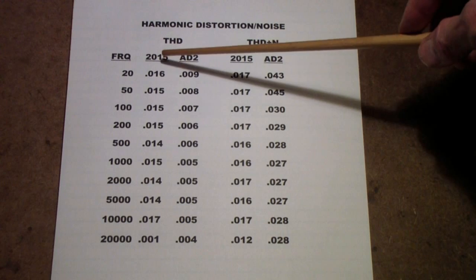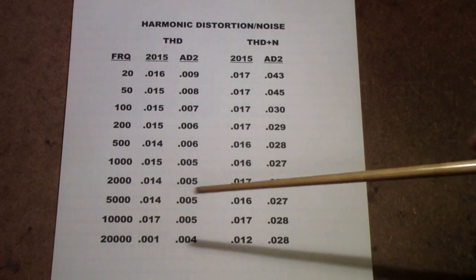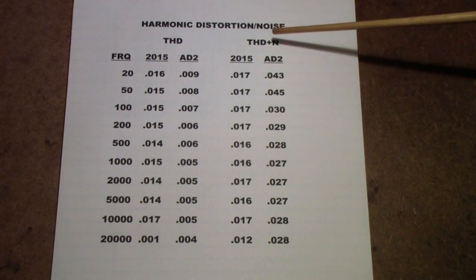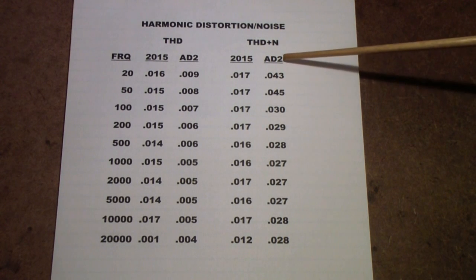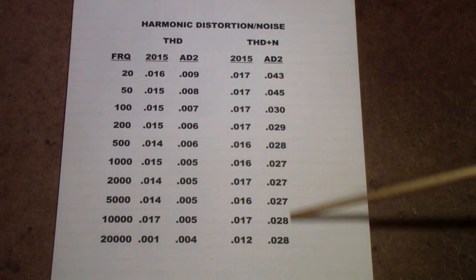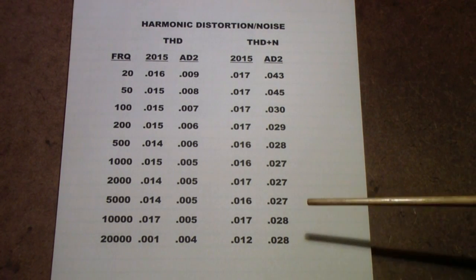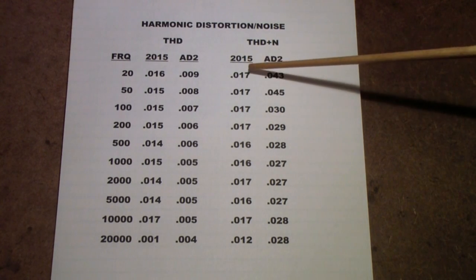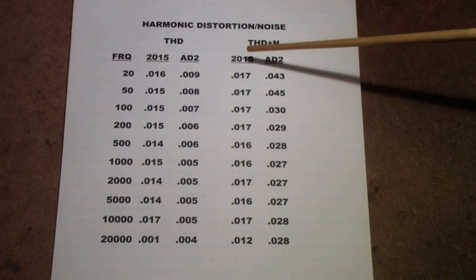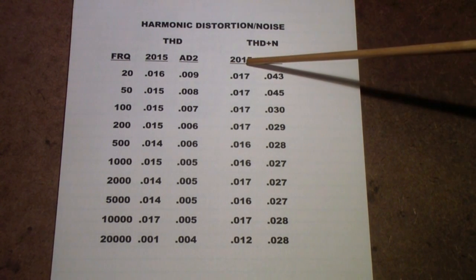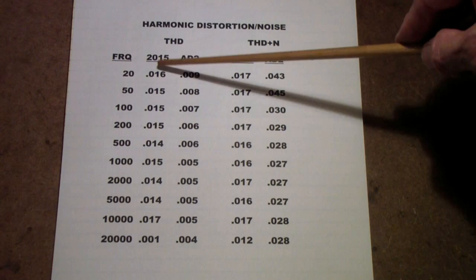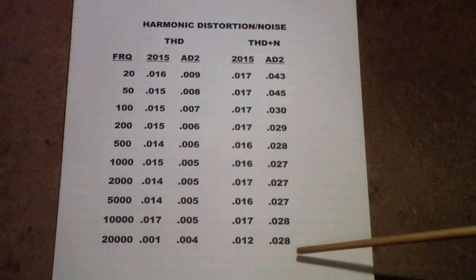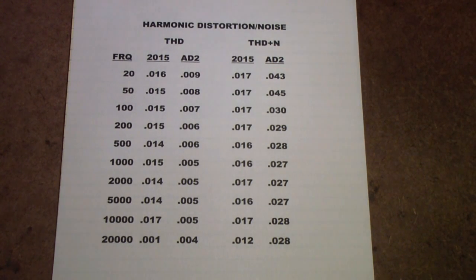Except for 20 kilohertz, the Analog Discovery 2 did consistently better by quite a bit than the Keithley internal generator. However, when I measured total harmonic distortion plus noise, the Analog Discovery did consistently worse. Throughout the range, the Keithley read about the same with THD plus noise as it did with just THD, and it was fairly consistent across the entire range.